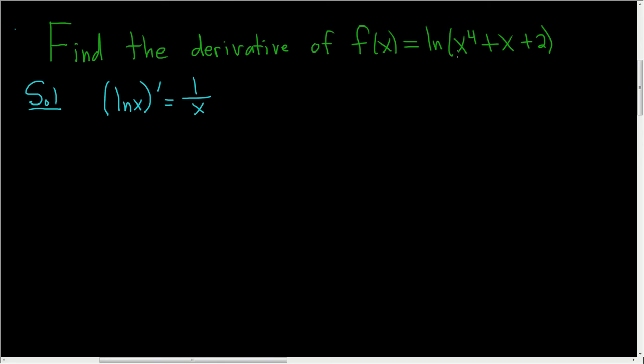However, in this case, we don't have the natural log of x. We have the natural log of another function. So we have to use what's called the chain rule.